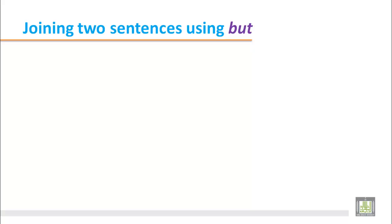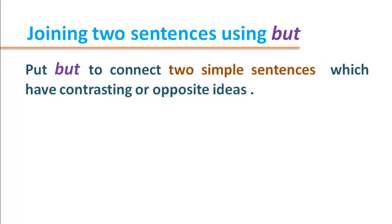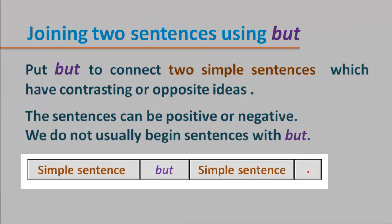We are joining two sentences using 'but'. Put 'but' to connect two simple sentences which have contrasting or opposite ideas. The sentences can be positive or negative. We don't usually begin sentences with 'but'. The structure shows a simple sentence, then 'but' as a conjunction in the middle, then another simple sentence.